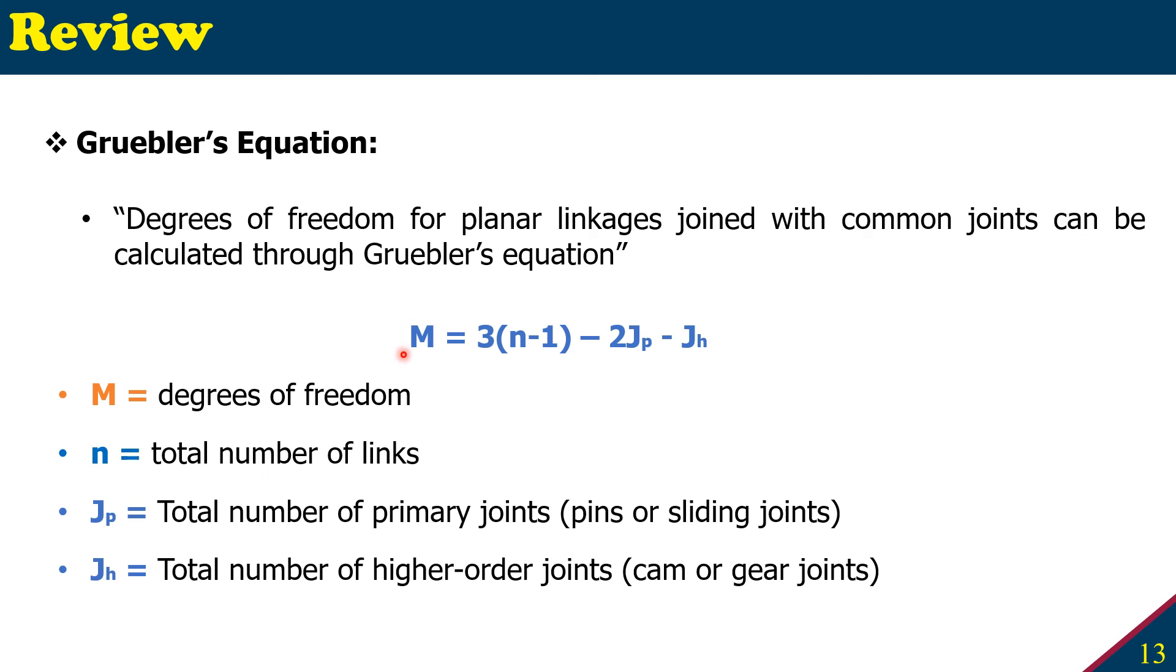So for the four bar linkage, M would be the degree of freedom, n is the total number of links, JP is the total number of primary joints which are pins or sliding joints, and JH would be the total number of higher order joints such as having cams or gears.